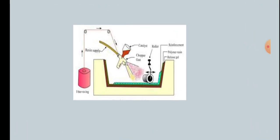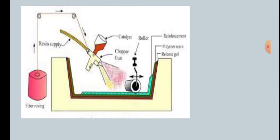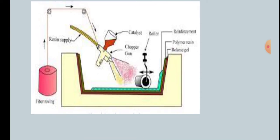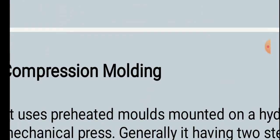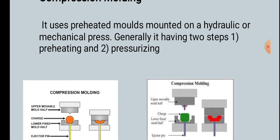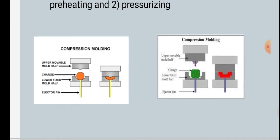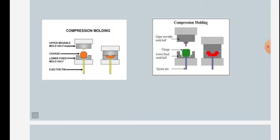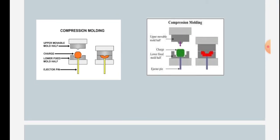Now we will see compression molding. It uses pre-heated molds mounted on a hydraulic or mechanical press. Generally it has two steps: pre-heating and pressurizing. Compression molding is shown in the figure: upper movable mold half, charge, lower fixed mold half, and ejection pin.